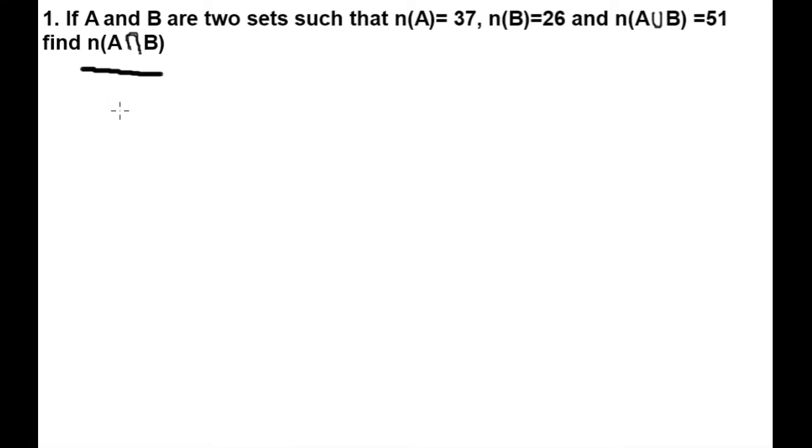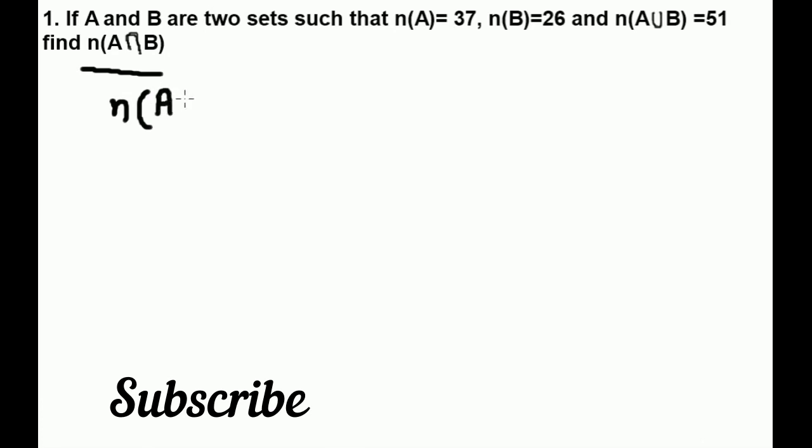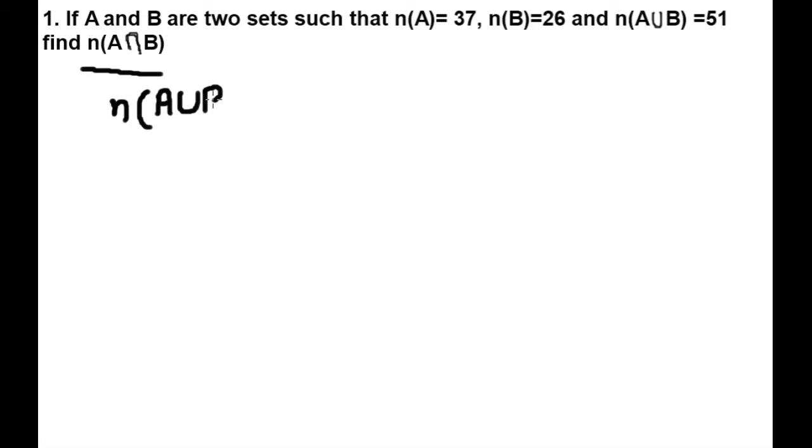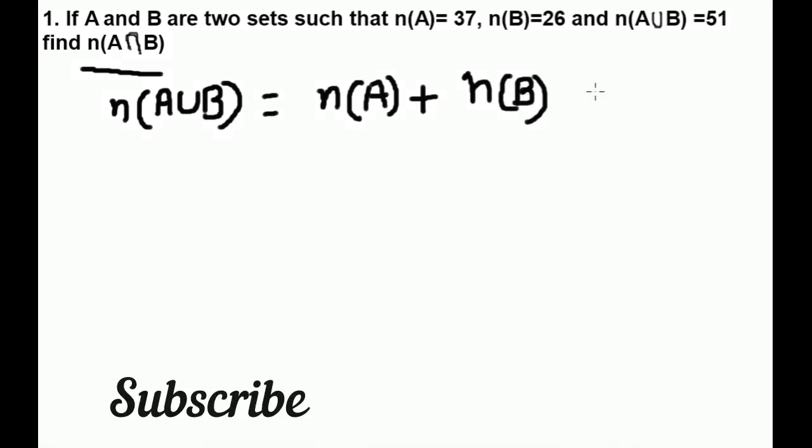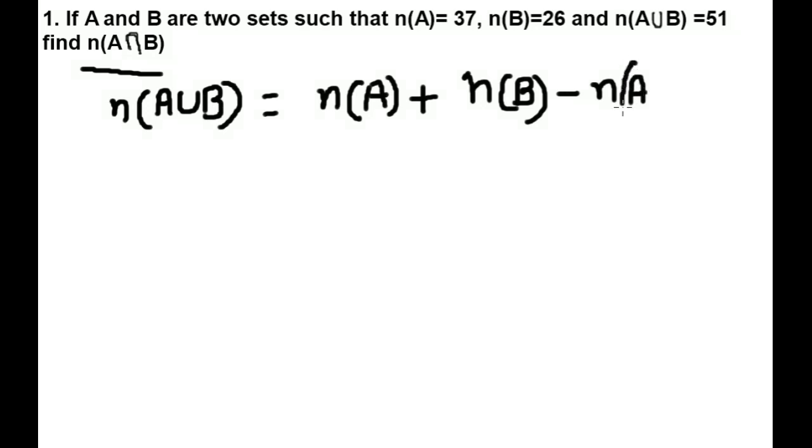So we know a formula. It is n(A union B) equals n(A) plus n(B) minus n(A intersection B).